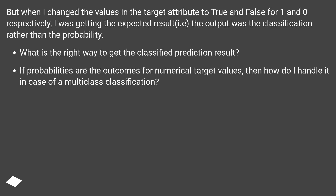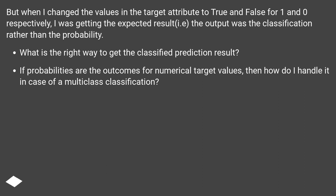But when I changed the values in the target attribute to true and false for 1 and 0 respectively, I was getting the expected result, i.e. the output was the classification rather than the probability. What is the right way to get the classified prediction result? If probabilities are the outcomes for numerical target values, then how do I handle it in case of a multiclass classification?